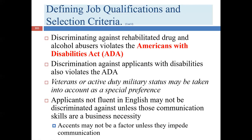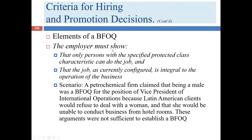Let's revisit the BFOQ affirmative defense elements. The employer must show two things: first, that only persons with that specified class characteristic — for example, women, or people of a particular religion — can perform the job; and second, that the job as currently configured is integral to the operation of the business. If the job function falls into the 'nice but not essential' category, a court will not approve the BFOQ even if the first condition is met.